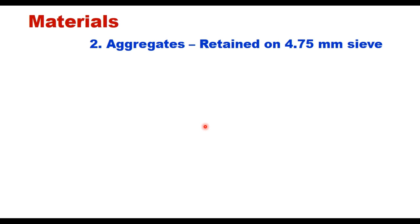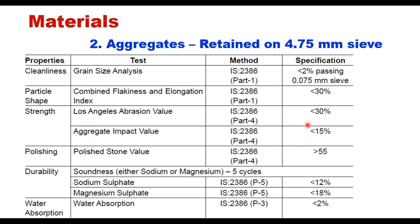For aggregate, there are two types: coarse aggregate and fine aggregate. Coarse aggregate is retained on the 4.75 mm sieve and should be hard, crushed stone with properties as specified in the table. Not more than 2% should pass the 75-micron sieve. Combined flakiness and elongation index should be less than 30. Impact value less than 15. Polished stone value should be more than 55, and a durability test should also be conducted, particularly when water absorption is more than 2%.